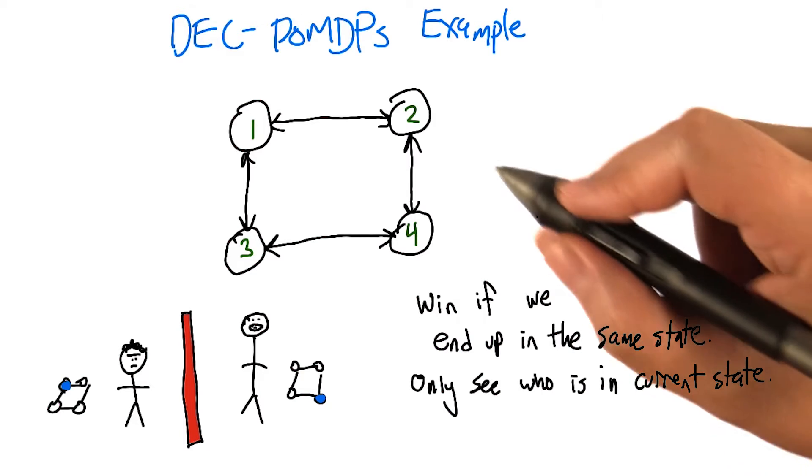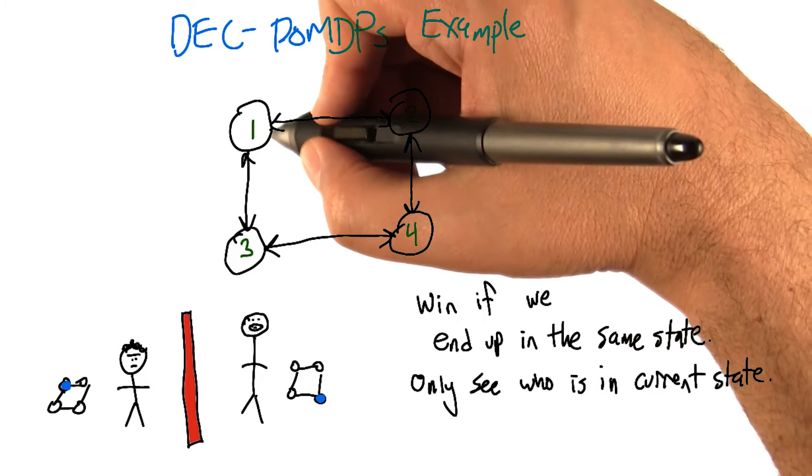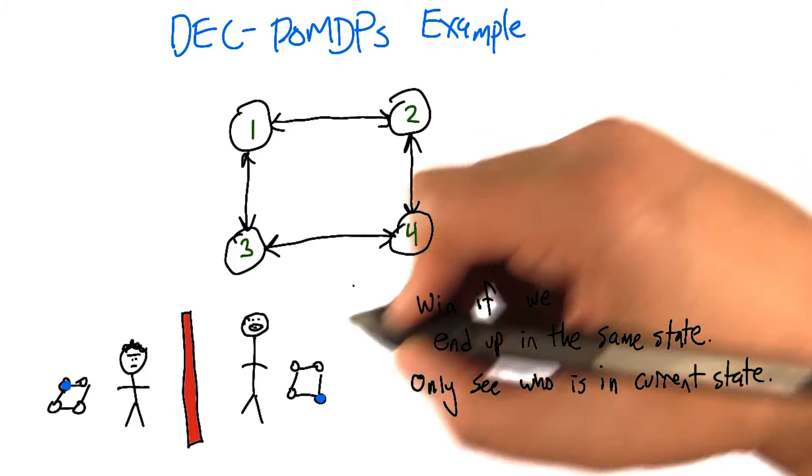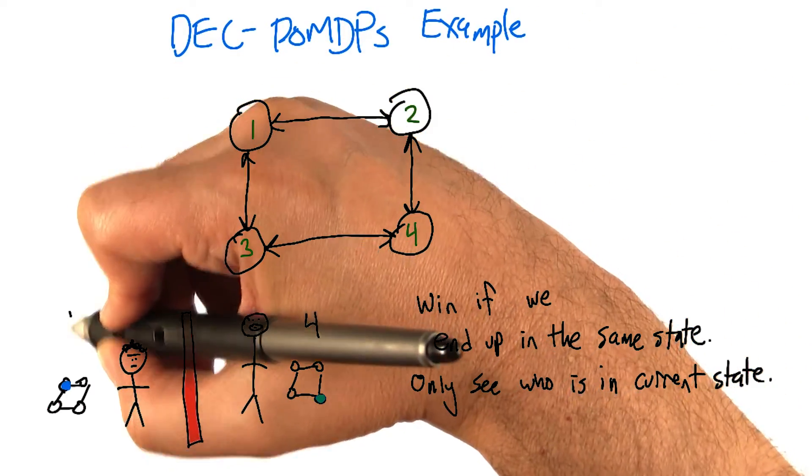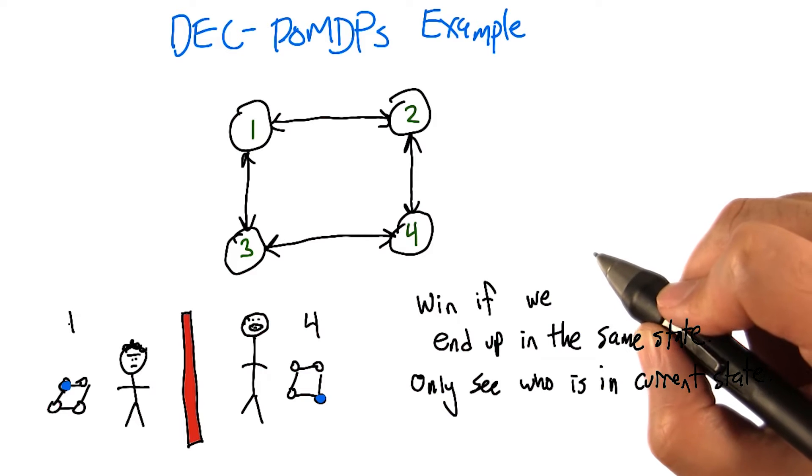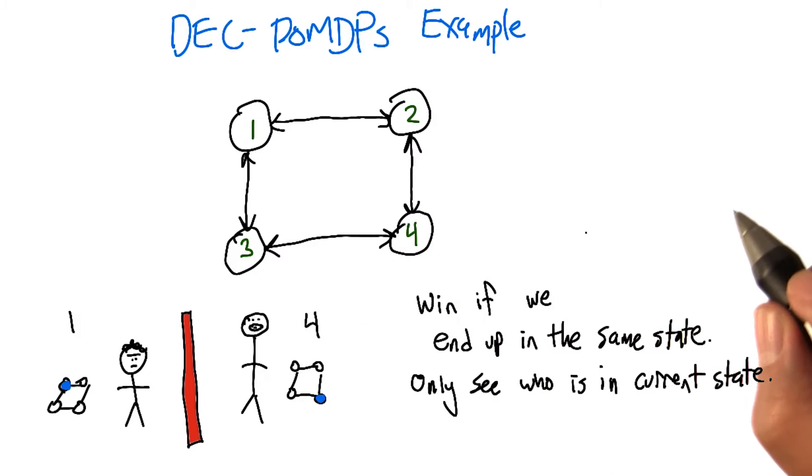But the first thing we have to do is actually end up in the same place. So we each know which state we are in. You're in state four, by the way. But you don't know which state the other person is in. You don't know where I am, for example. I know where I am, but I don't know where you are. We win if we end up in the same state.